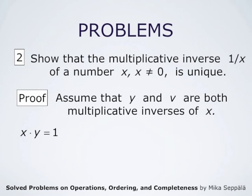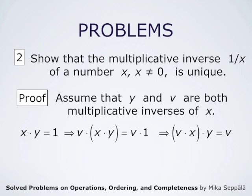Since y is a multiplicative inverse of x, x times y equals one. By multiplying both sides of this equation by v, we get v times (x times y) equals v times one. But v times one is simply v. And v times (x times y) is the same as (v times x) times y. So we get (v times x) times y equals v. Since v times x equals one by the multiplicative inverse property of v, we get one times y equals v. One times y is y, so we conclude that y equals v. This means that the multiplicative inverse of a non-zero number x is necessarily unique.